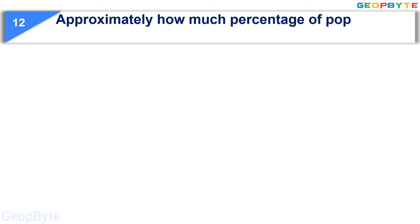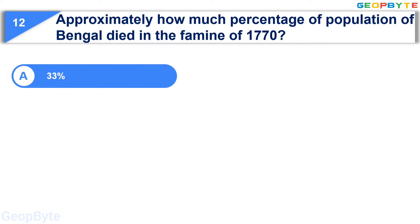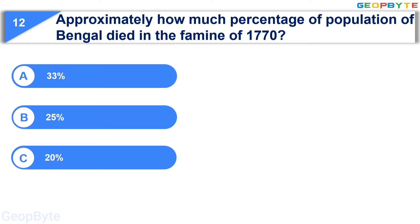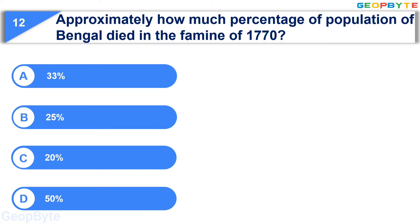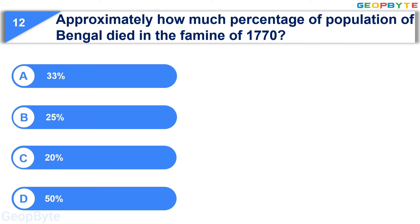Moving to the twelfth question: approximately what percentage of the population of Bengal died in the famine of 1770? Option A: 33%, Option B: 25%, Option C: 20%, Option D: 50%. Your time starts now. Your time is up and the correct answer is Option A: 33%.